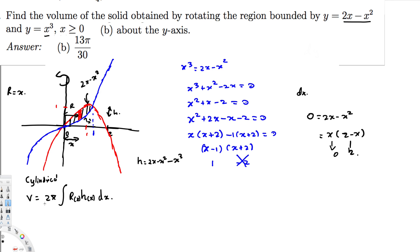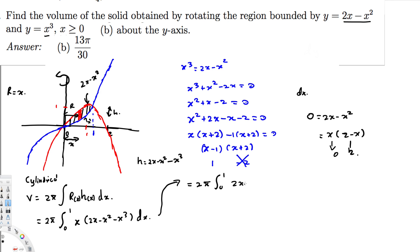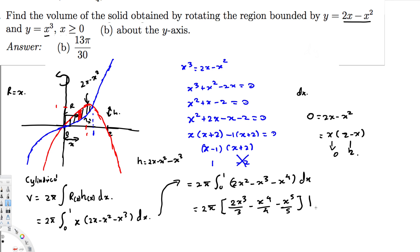Now we have the radius and height in terms of x, so we plug into the formula. V = 2π ∫₀¹ x(2x - x² - x³) dx. Distributing x, this becomes 2π ∫₀¹ (2x² - x³ - x⁴) dx. Integrating: 2π [2x³/3 - x⁴/4 - x⁵/5] from 0 to 1.